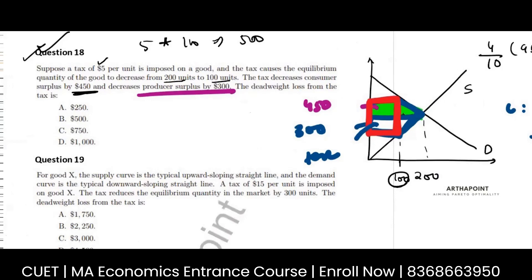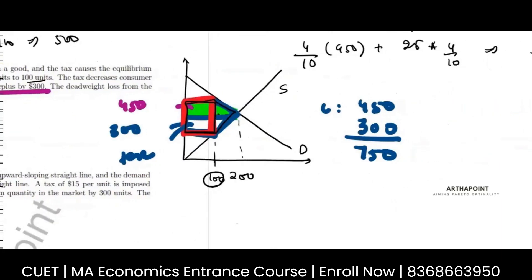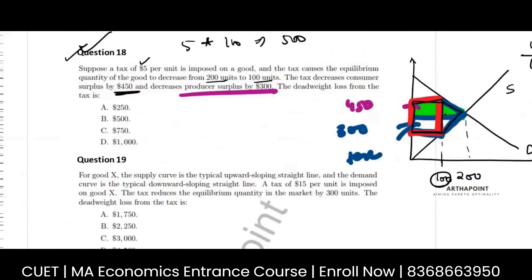So what will be my deadweight loss? This complete area minus the area of this rectangle. So it will be 750 minus 500, 250. The answer is 250.